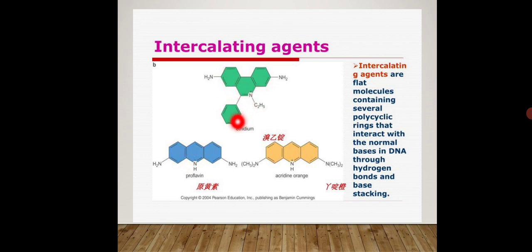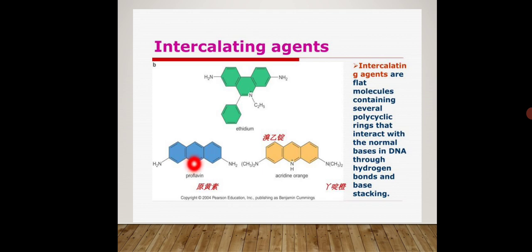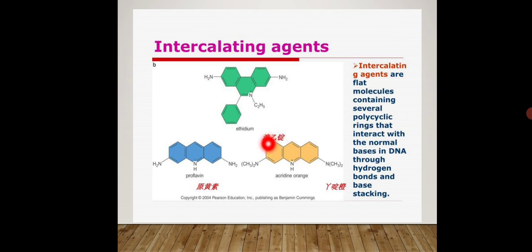You can see here four polycyclic rings in one structure, and three polycyclic rings in others. These rings interact with the normal bases — adenine, guanine, cytosine, and thymine — through hydrogen bonding. What intercalating agents actually do is insert themselves between the bases in the DNA.